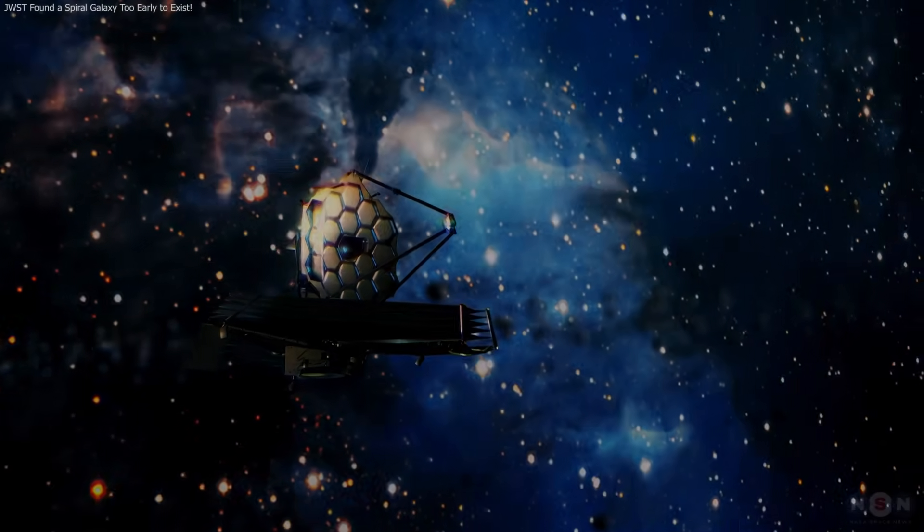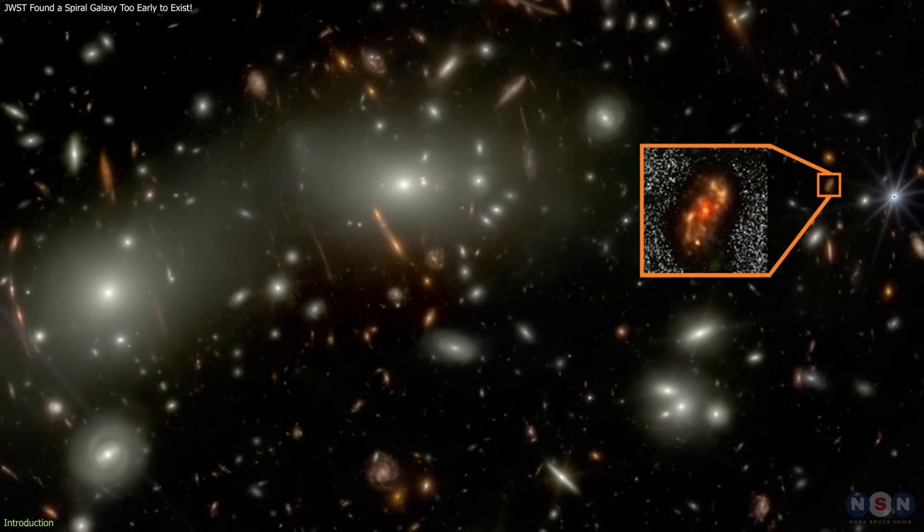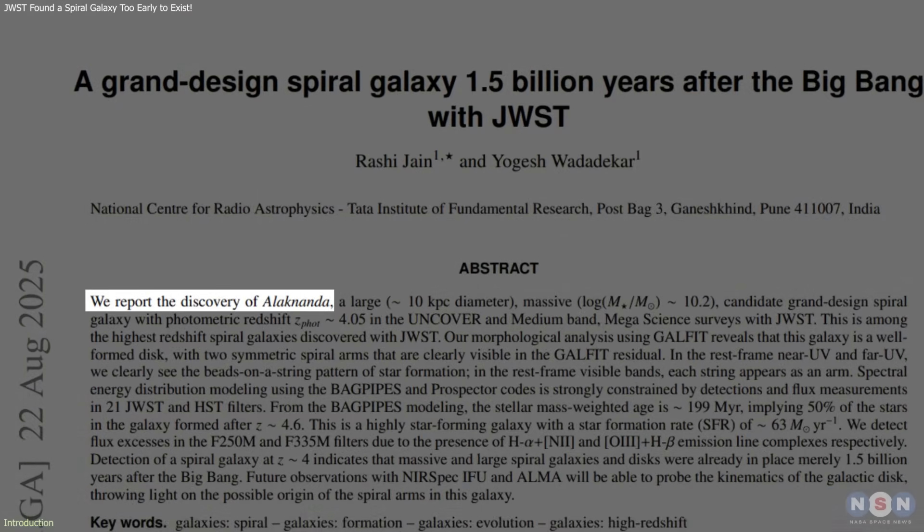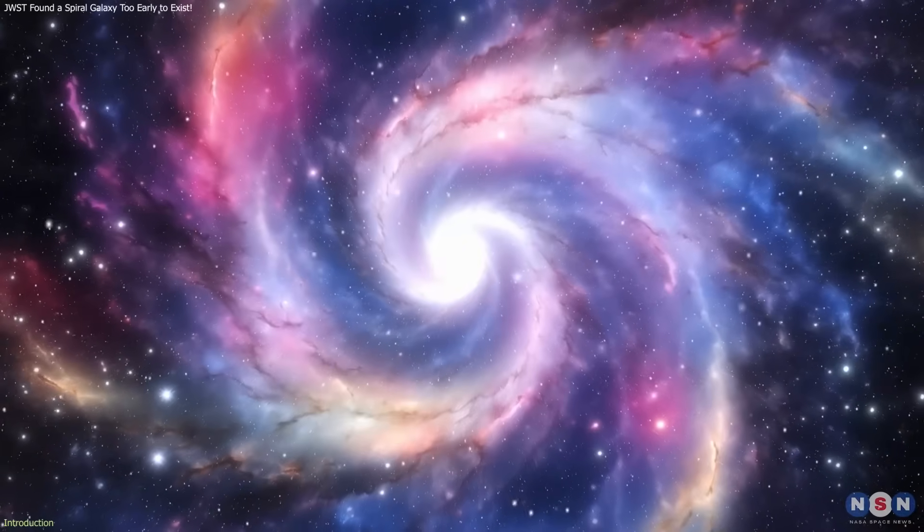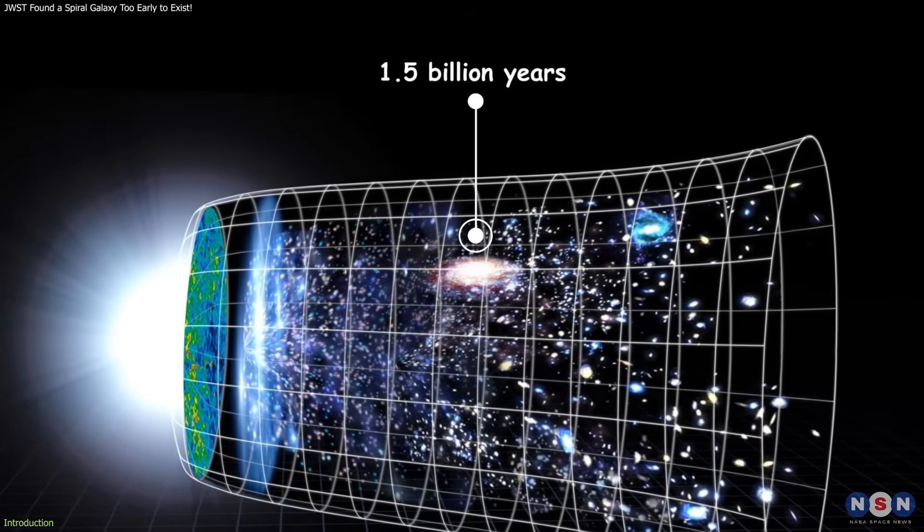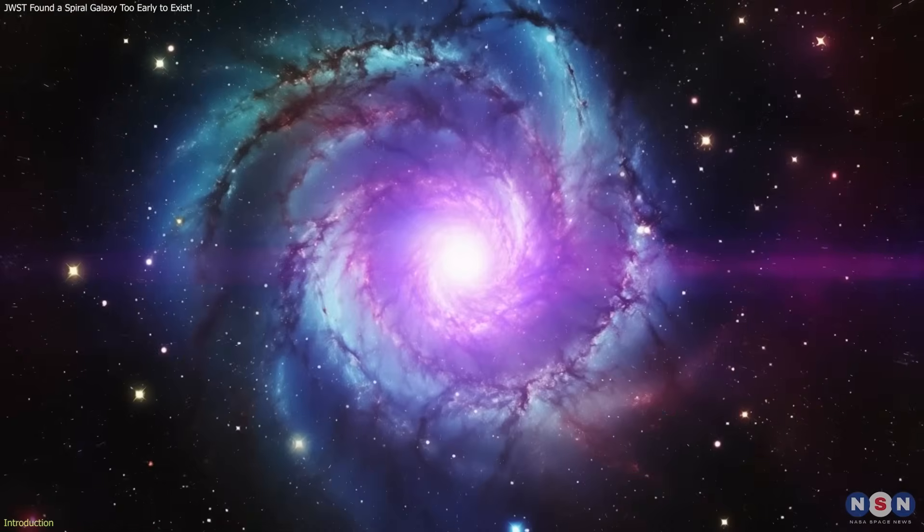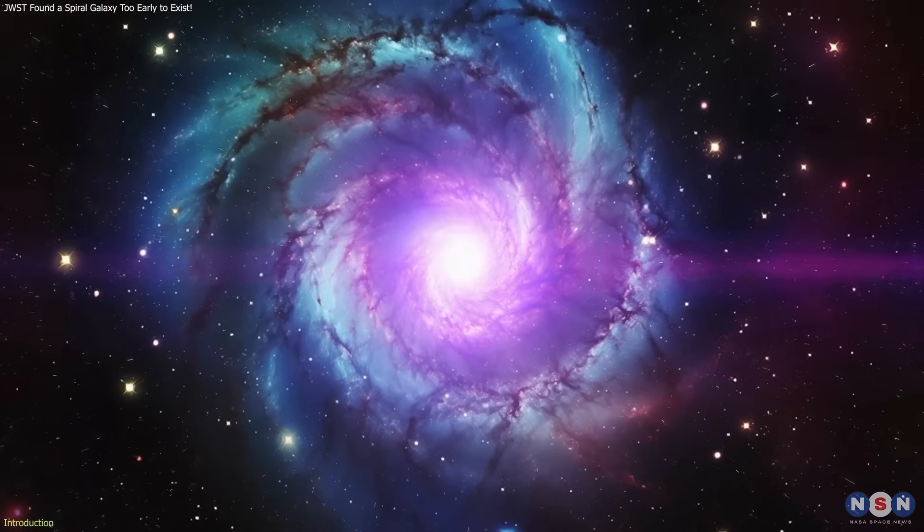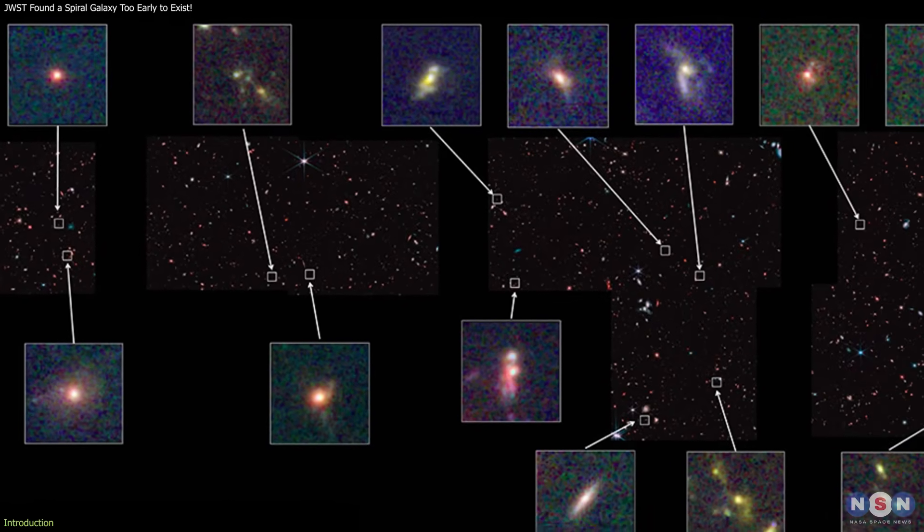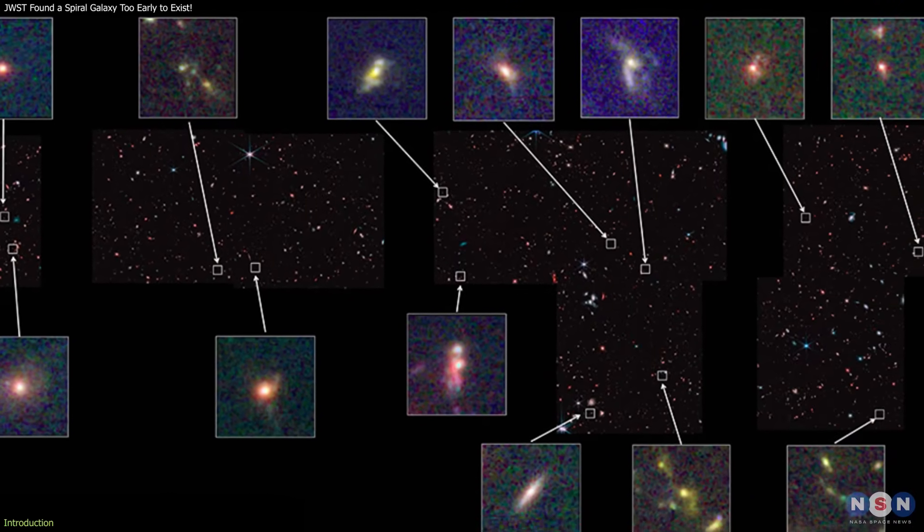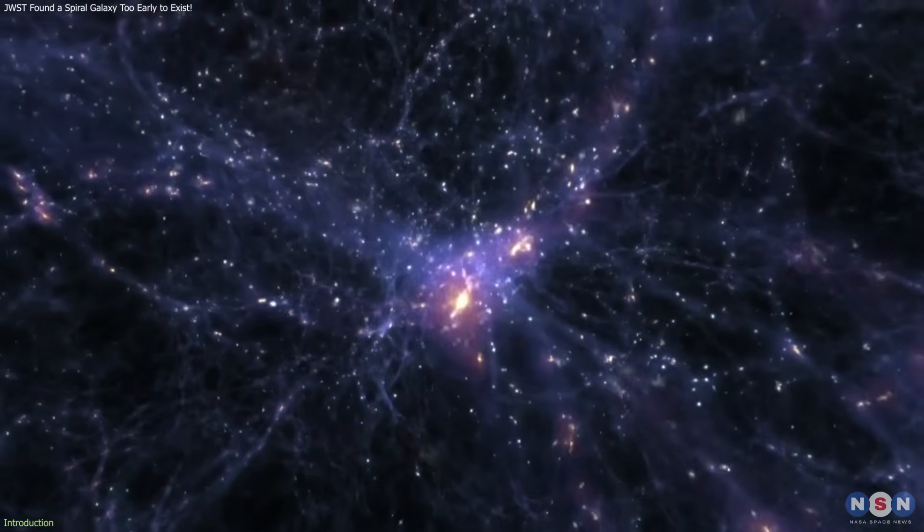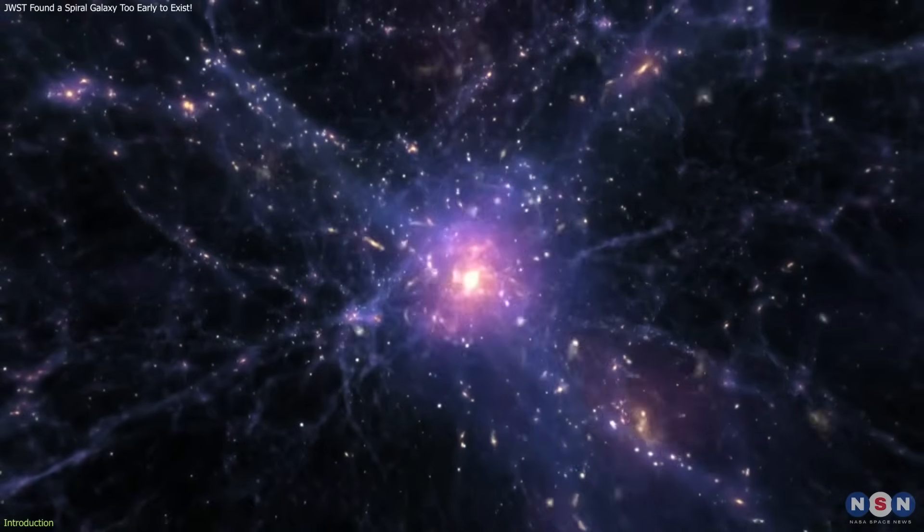The James Webb Space Telescope has just identified a galaxy that shouldn't exist this early in the universe's history. Named Alec Nanda, it's a fully formed spiral galaxy observed only 1.5 billion years after the Big Bang, long before our models say such structure should appear. This adds to a growing set of early galaxies that seem too organized and too massive for their epoch, suggesting that some parts of our galaxy formation framework may need revision.